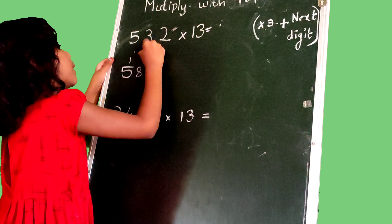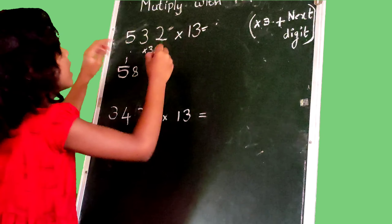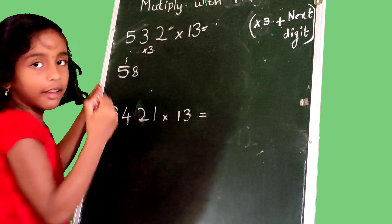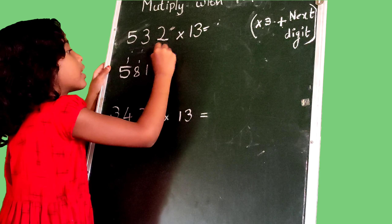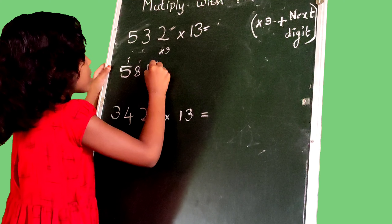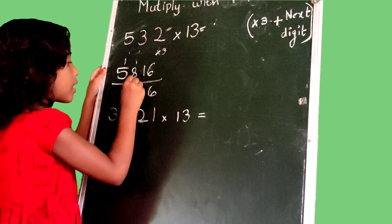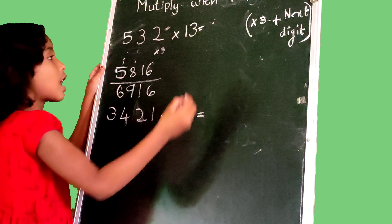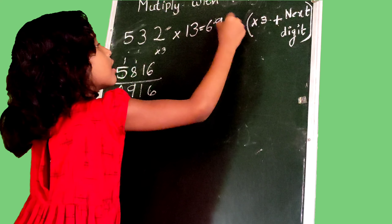Then 3, we multiply with 3: 3 times 3 is 9. Add next number: 9 plus 2 is 11. We write 1 and carry 1. Then 2, we multiply with 3: 2 times 3 is 6. Then 6 as this, 6. 1 as this, 1. 8 plus 1 is 9. The answer is 6916.